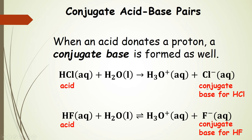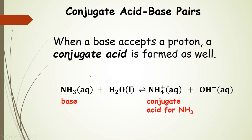So those are acid/conjugate base pairs. We can do the same thing with bases. Taking ammonia as our base and reacting it in water, we get ammonium — notice this is the base with an extra H+ added. That's our conjugate acid, which would act as an acid in solution, and then we form hydroxide. So the conjugate acid for a base is going to have an extra H+ added.